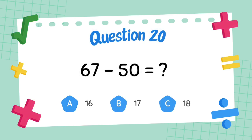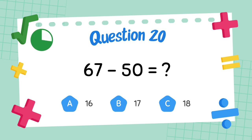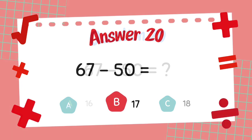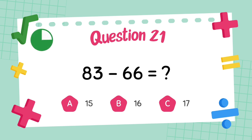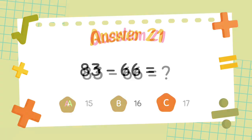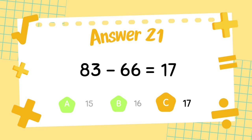What is 67 minus 50? The answer is 17. What is 83 minus 66? The answer is 17.